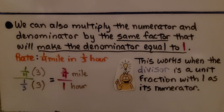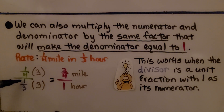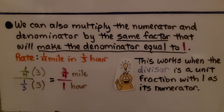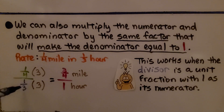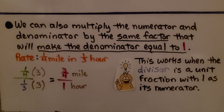It doesn't work as well if there is not a 1 in the numerator. So if we have 3/8, 2/5, or 9/16, it's better to use division. But when we have a unit fraction in the denominator, it's very easy to turn it into a 1.